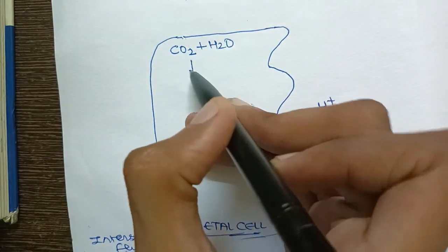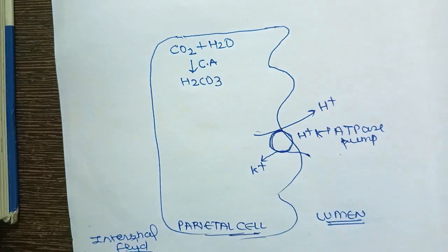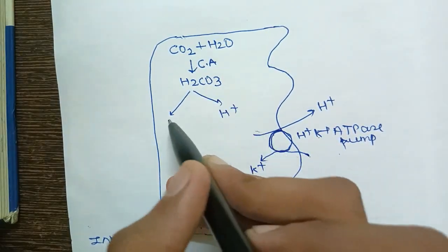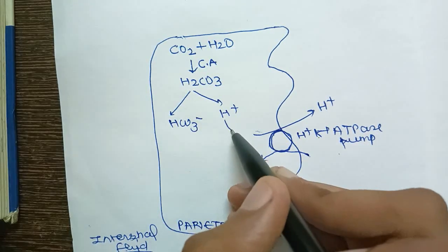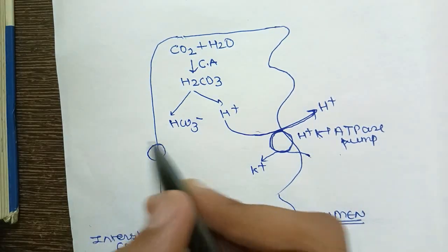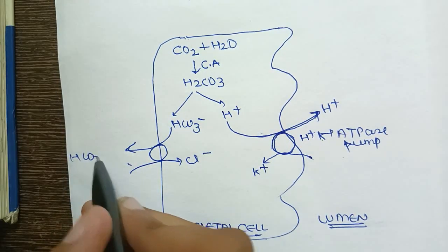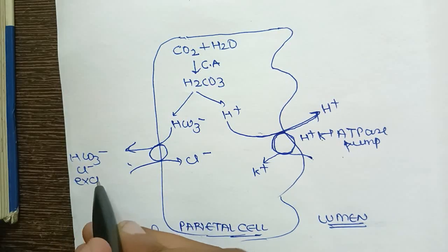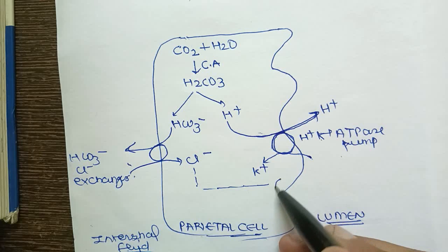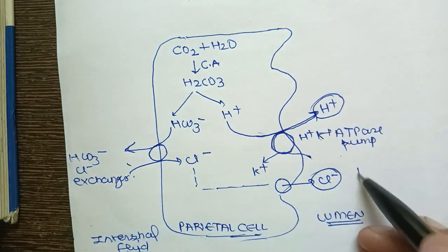This is H2CO3, carbonic acid. Carbonic acid breaks down into H+ and bicarbonate ion. This H+ is secreted and this is a bicarbonate channel which exchanges bicarbonate with chloride. This channel is the bicarbonate-chloride exchanger, and this chloride is secreted through a chloride channel here. So here is H+ or HCl secretion - gastric acid secretion.